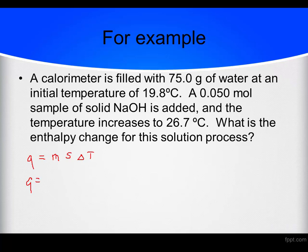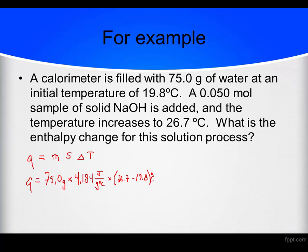How many grams of water do we have? I'm going to put 75.0 grams. The specific heat capacity of water is 4.184 joules over grams degrees Celsius. And then delta T — the final temperature of the water is 26.7, and the initial temperature of the water is 19.8 degrees Celsius.